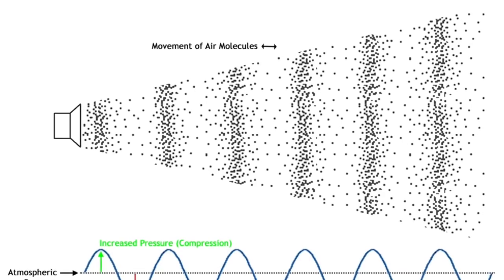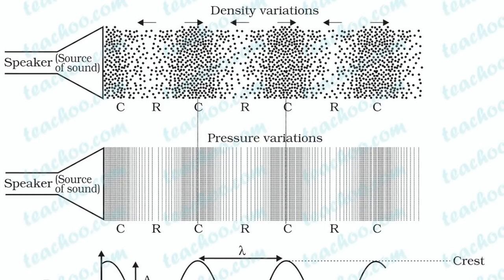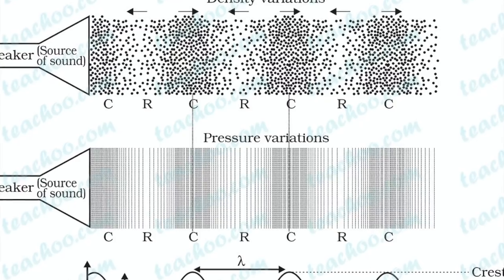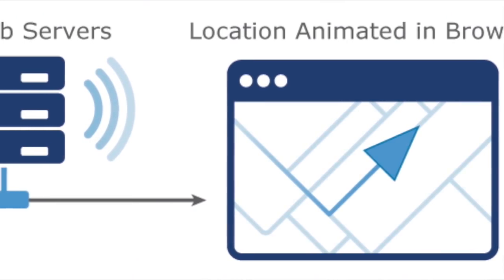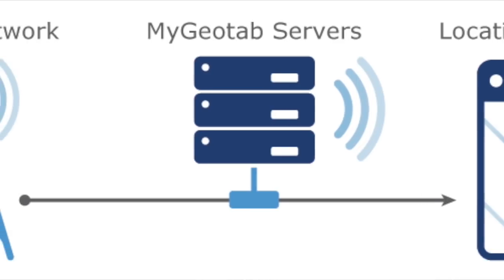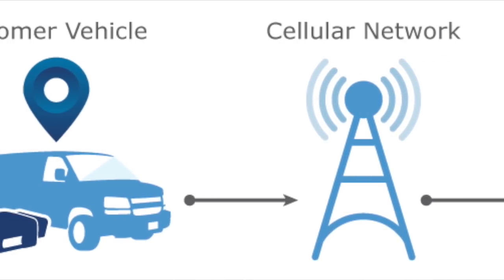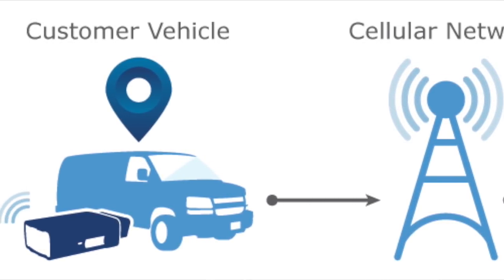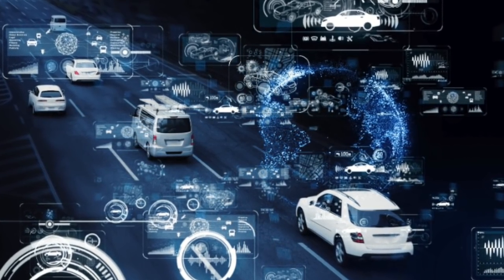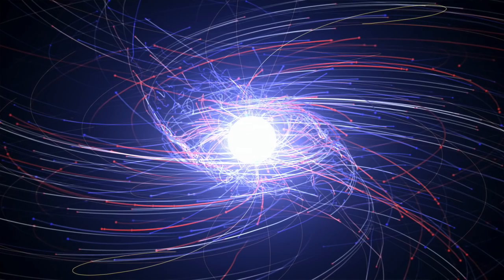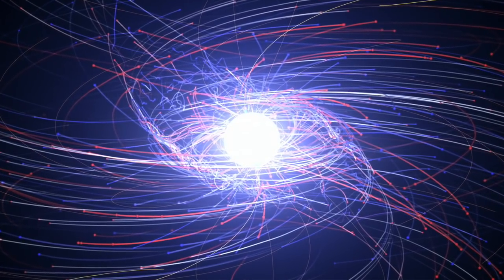Telematics means long-distance information generally harnessed and created by some type of computational technological device. Now you might ask: what does all this have to do with antimatter, human veins, and all that? We're going to jump right into it. According to Wikipedia, antimatter in modern physics...